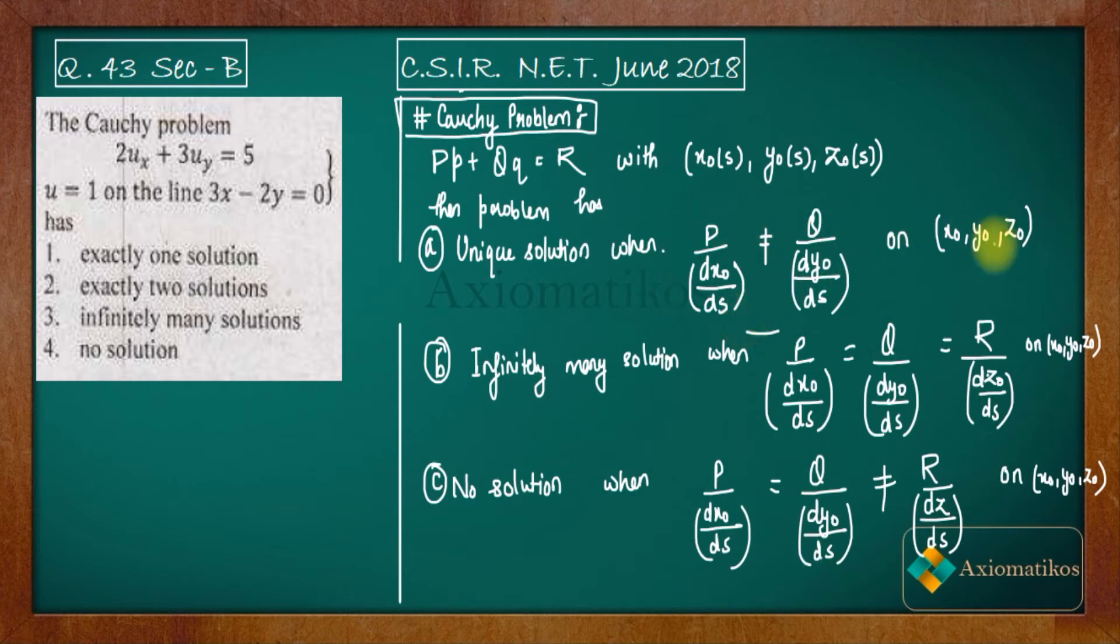Please keep in mind that we are evaluating P, Q, R on this initial condition x₀, y₀, and z₀. So capital P, capital Q, and capital R in this thing we are evaluating on the given condition. Now see it is given to us that u = 1 on 3x - 2y = 0. It means that y = 3/2 of x. So what will be the initial condition?